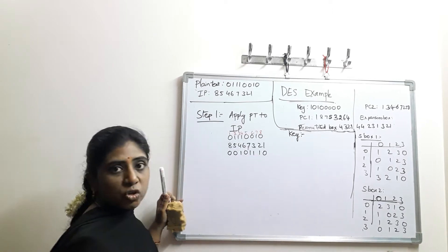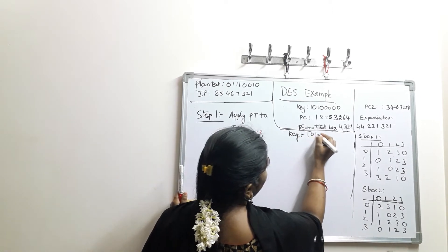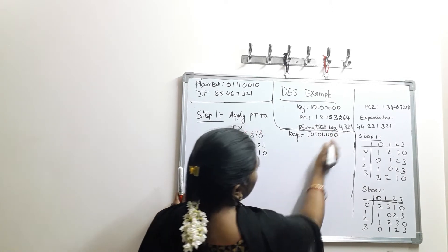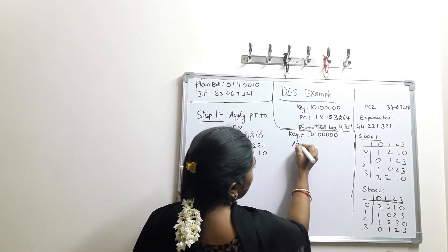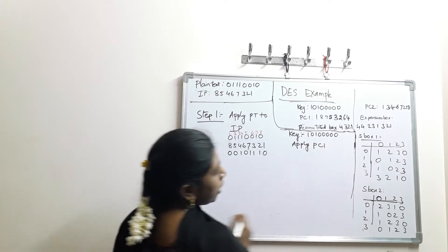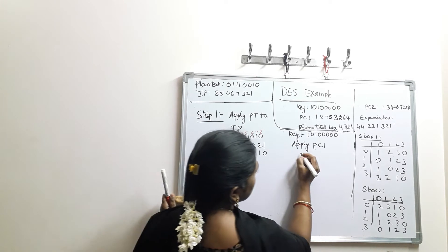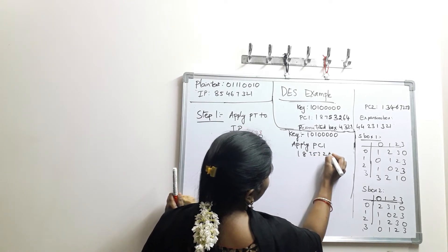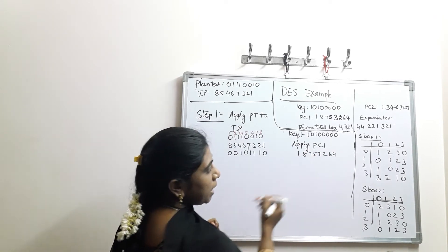First take the key value: 1, 0, 1, 0, 0, 0, 0, 0. Then apply Permuted Choice 1. The PC-1 values are 1, 8, 7, 5, 3, 2, 6, 4. Apply these values accordingly.